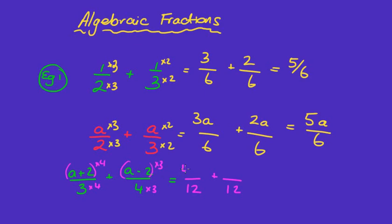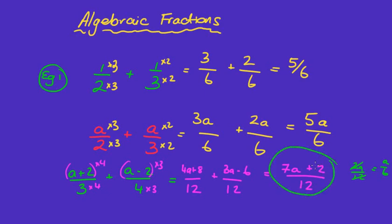Multiplying everything on the top gives us four a plus eight, and three a minus six. Since the denominators are now the same, we combine: four a plus three a is seven a, and eight minus six is two, giving seven a plus two over twelve. To simplify, a number must go into all three terms. Two goes into twelve and two, but not seven, so that's our final answer.